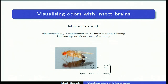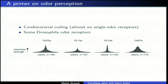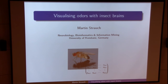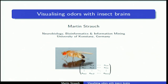Visualising odours with insect brains. These are two typical ingredients of my talks on insects and matrix algorithms. Normally I would call the talk something like 'processing of odour information in the brain of insects', but for this venue I thought I'd call it 'visualising odours with insect brains'. We would like to turn an odour — a chemical molecule — into an image.